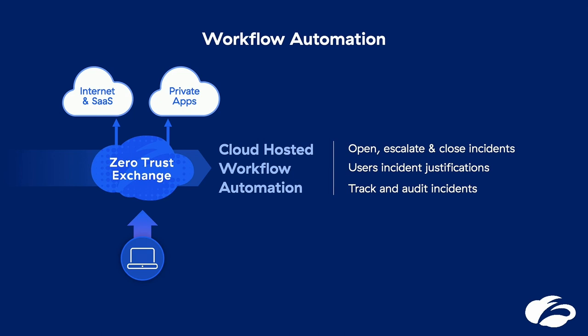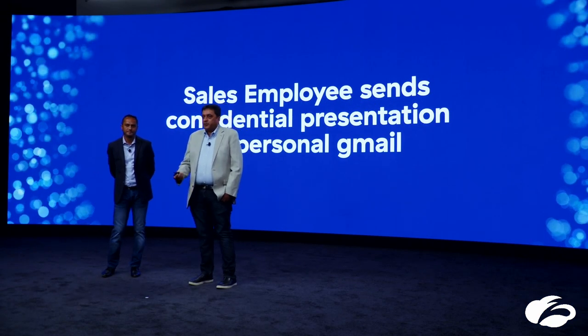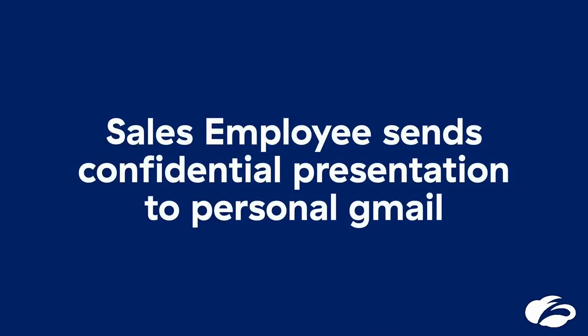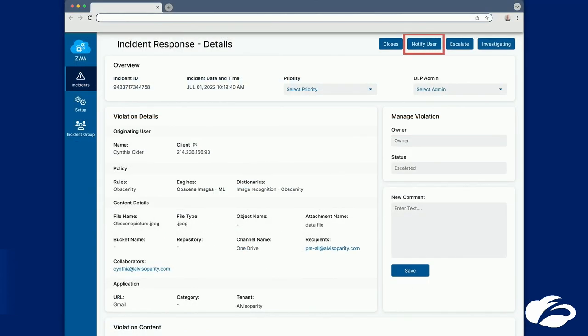Let's take an example. Say a sales employee sends a confidential presentation to a personal Gmail. This is surely a violation of DLP policy. The DLP engine immediately catches that and sends the incident to the Zscaler workflow automation engine, which automatically assigns it to the right DLP admin and prioritizes it. The DLP admin can come to the console and get more information on that incident, including the trigger data if allowed. All customer and sensitive data stays at the customer's control — it never comes to Zscaler, and it's all controlled by very strong privacy flags.